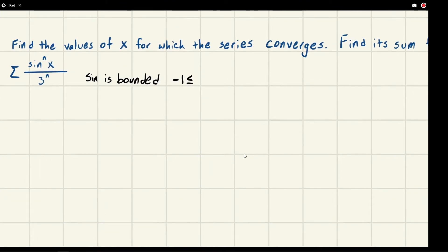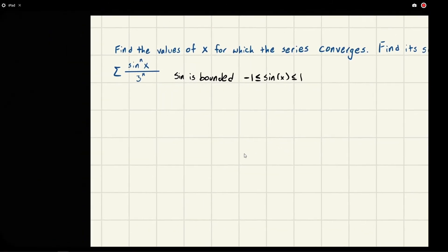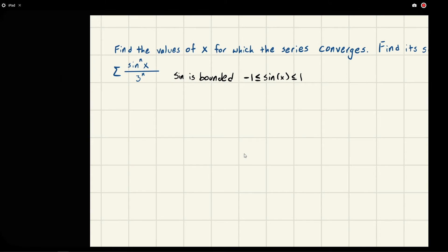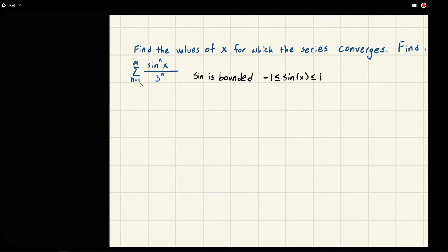Sine is bounded between negative one and one. If we look at this, that's the biggest and smallest sine is ever going to be. So this is only ever going to reach the size of one third.